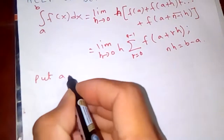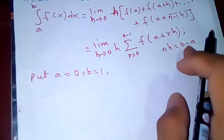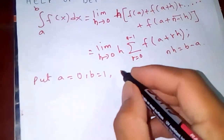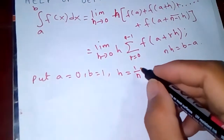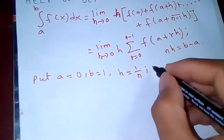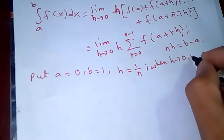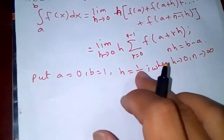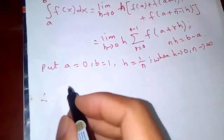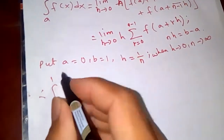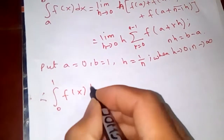Now we substitute a equal to 0 and b equal to 1. That means h will be 1 over n, and when h tends to 0, n tends to infinity. From here, our series becomes the integral from 0 to 1, because a is 0 and b is 1, of f(x) dx.